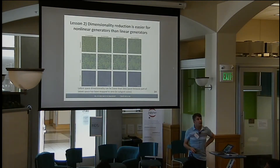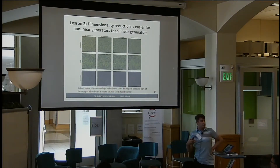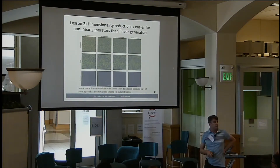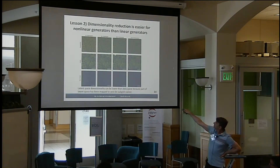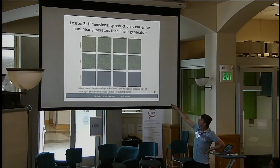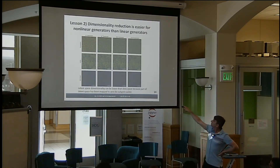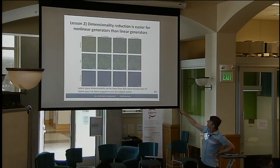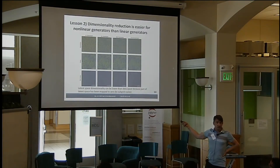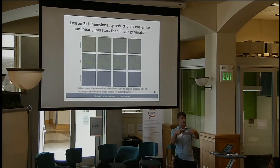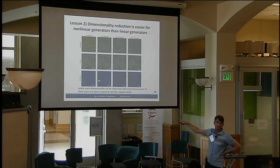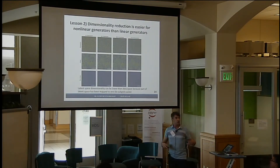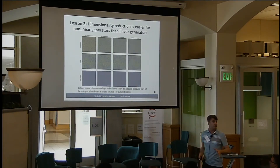Lesson two: non-linear generators are easier to do dimensionality reduction on than linear generators. Starting with white noise and filtering out high frequencies gives a visually very different result at 8x or 64x compression. But doing the same 8x compression on a nonlinear model — an N-body simulation output — shows no visible difference at all. Why? Because the high-frequency modes have been mapped to such small scales that they don't even show up in the nonlinear data. So you can actually do dimensionality reduction of the latent space without losing information.